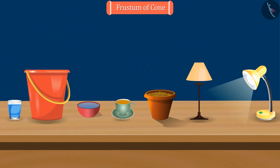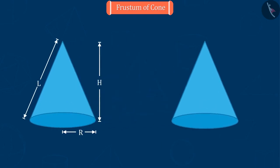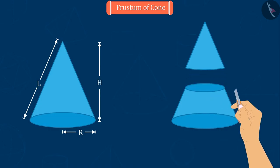Let us now observe it. To understand the frustum of a cone, let's take a cone, whose height is capital H, capital L is the slant height and capital R is the radius. If we cut this cone parallel to its base, like this, we get two pieces of the cone.